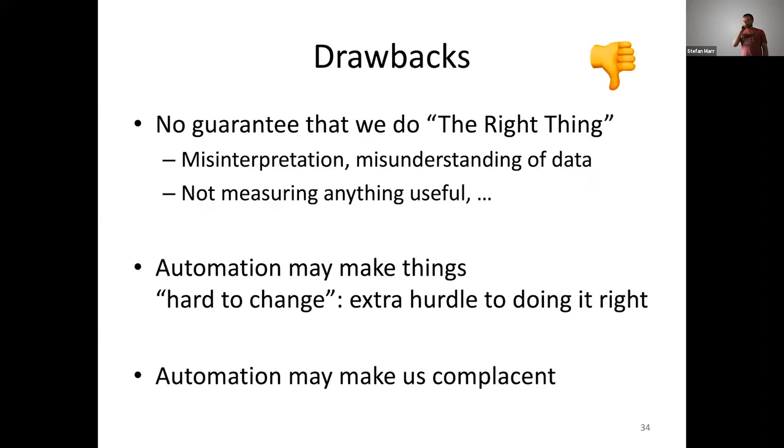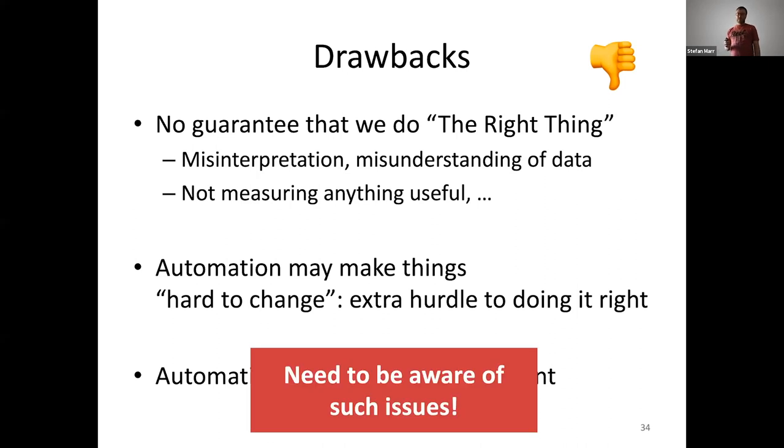Other drawbacks? Of course, there is no guarantee that we do the right thing. In any step of the chain, we can still introduce misinterpretation, misunderstanding of the data, or you don't measure anything useful to begin with by choosing the wrong benchmarks. Automation in that kind of form can also make it hard to then actually do the right thing because it works. We have a thing that works, and we have always been doing like that. So, it can make us complacent. So, that's kind of something to be aware of, and we shouldn't rest on just having the automation. We actually still need to think about whether it's the right thing to do.